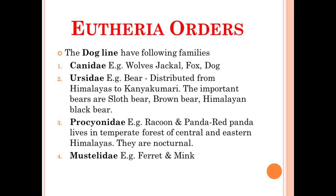The dog line is also sub-classified into different families. The first one is Canidae — for example, dog, jackal, fox. Ursidae — for example, bear, and bear is distributed from the Himalayas to Kanyakumari. The next family is Procyonidae — for example, raccoon and red panda. Their geographical location is that they live in the temperate forests of central and eastern Himalayas and are basically nocturnal animals. The last family under the dog line is Mustelidae — for example, ferret and mink.